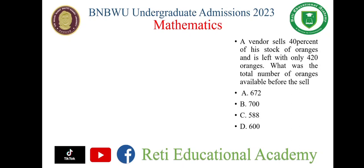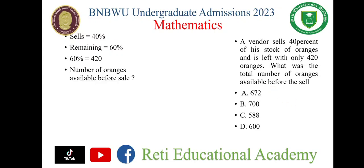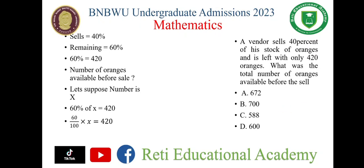A vendor sells 40% of his stock of oranges and is left with only 420 oranges. What was the total number of oranges available before the sale? After selling 40%, the remaining oranges are 60% of the total. So let's suppose the total number is X. 60% of X is equal to 420.